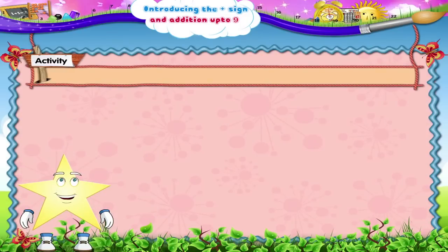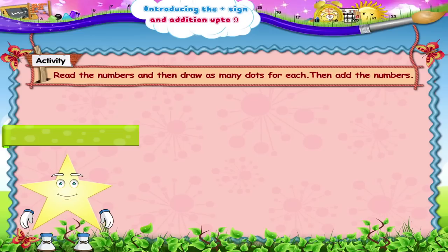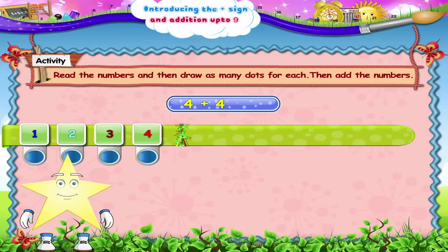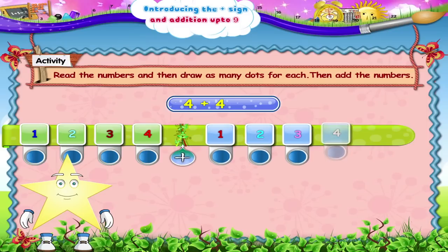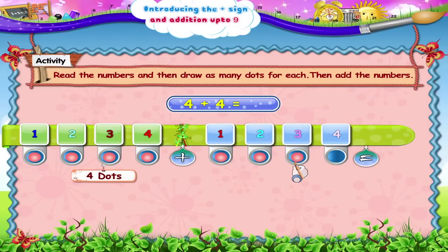And here's another activity. We have to first read the numbers and then draw as many dots for each, then add the numbers. Shall we begin? 4 plus 4. 1, 2, 3, 4 plus 1, 2, 3, 4 is 1, 2, 3, 4, 5, 6, 7, 8.